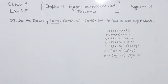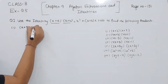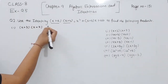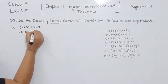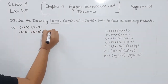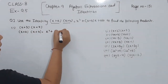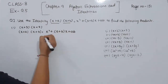We are having 7 parts in the question. We need to start with the first one. We are having (x + 3) and (x + 7). We need to use the identity (x + a)(x + b), which is equal to x squared plus (a + b) multiplied by x plus a·b.